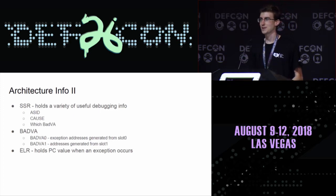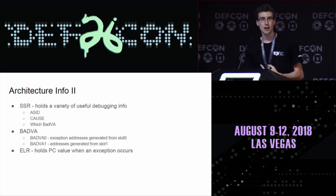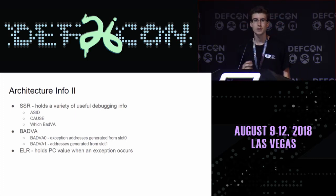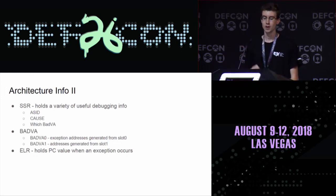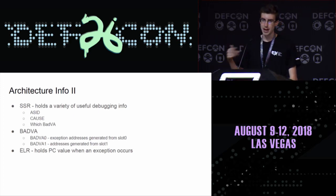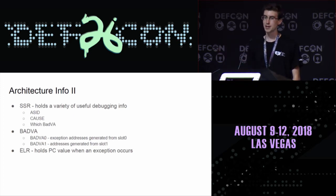They added some really useful things for debugging. You have a system status register which is the first place you should check when you get a RAM dump or any kind of crash. It holds the ASID — the address space ID the crash happened in — and an eight-bit value for the cause of the crash, whether it was a page fault, divide by zero, or other standard operations. It will also tell you which of the virtual address registers to look in for more information. There are two different bad virtual address registers holding exception addresses generated, with two separate execution slots per thread. And you have an exception link register which holds the program counter value from when an exception was triggered.